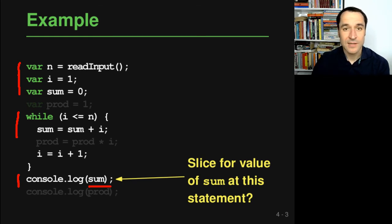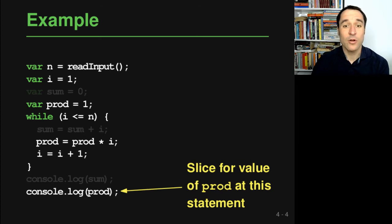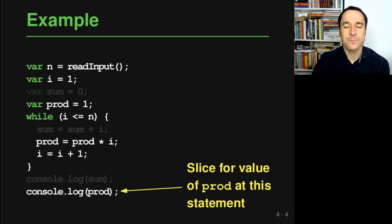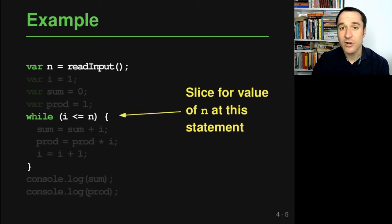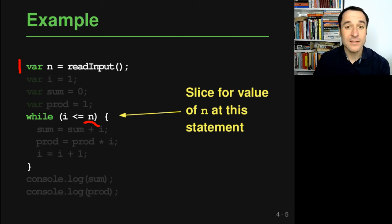We could also have a different slicing criterion. For example, we could care about the value of prod at the last line, and then the slice looks different — we can ignore everything related to the sum variable and focus only on what is relevant for prod. And of course this could not only be done for printed values; we can pick any variable, even in the middle of the program. For example, we could ask what determines the value of n at a given location, and then the slice is very simple — it only consists of the first statement that reads n, plus the loop needed to make a complete, compilable, executable program.